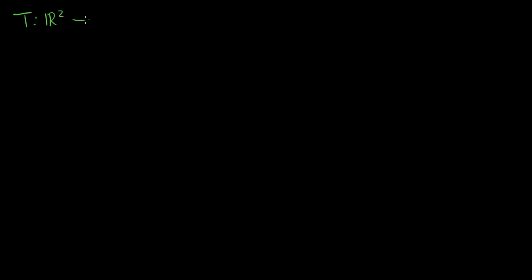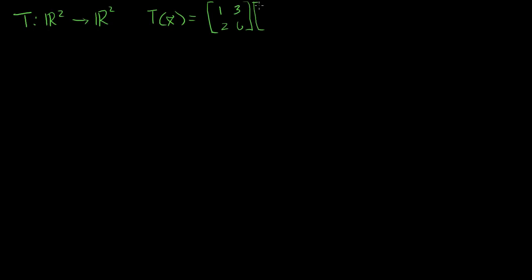Let's say I have some transformation from R2 to R2. It's essentially just a multiplication times a matrix. We know that all linear transformations can be expressed as a multiplication of a matrix. But this one is equal to the matrix 1, 3, 2, 6 times whatever vector you give me in my domain, times x1, x2.